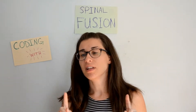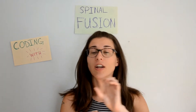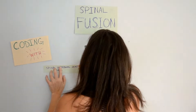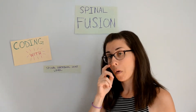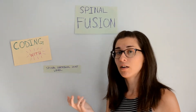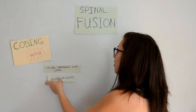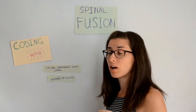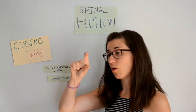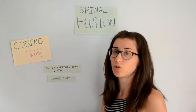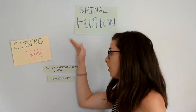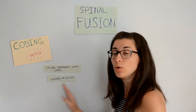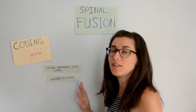Once you go into whichever body system you are coding for and find your fusion table, you need to figure out exactly which body part characters to use. You need to pinpoint the spinal level — thoracic, lumbar, cervical, etc. — and also how many joints are being fused: just one joint, or two or more. In the body part column of your table it will specify one joint, two to seven joints, etc.